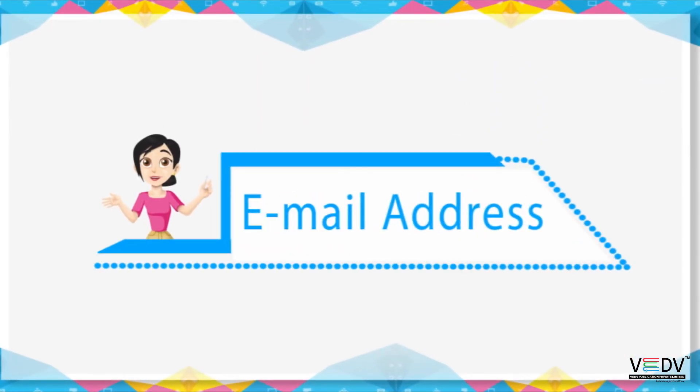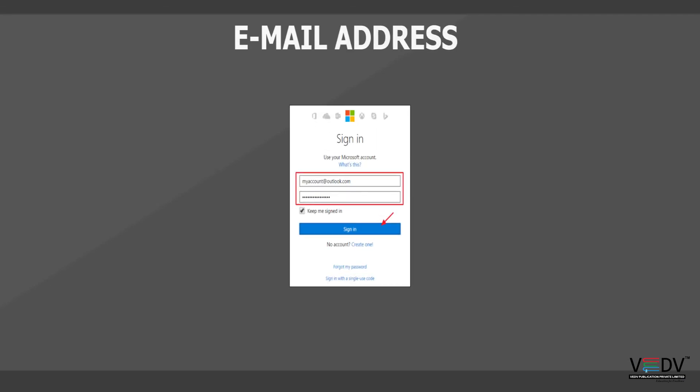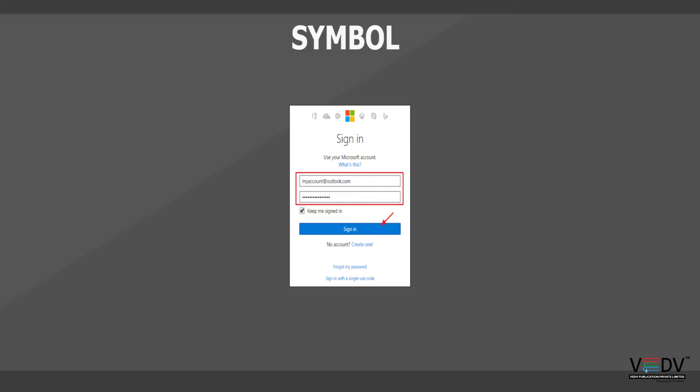Email Address: If we have an ISP account, we can establish an email address. An email address is a unique address — no two people can have the same email address. An email address is made up of three parts: the username, the at-the-rate symbol (@), and the email service provider address.